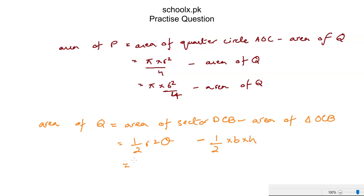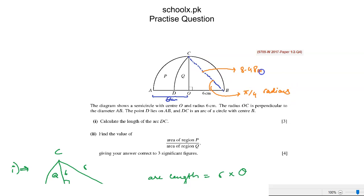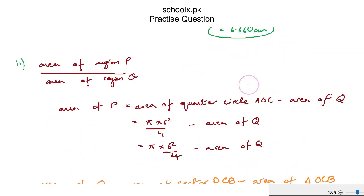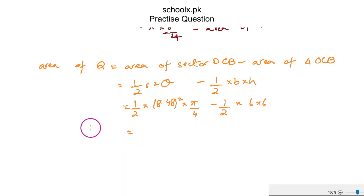The area of sector DCB is half R squared θ. R was found previously as 8.48 cm and the angle is π/4 radians. So the area of sector is half times 8.48 squared times π/4, minus half times base times height. Computing this, we get area Q equal to 10.23 cm².